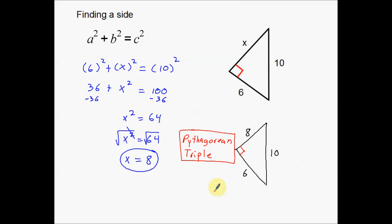There are a lot of common Pythagorean triples out there. As you do more and more problems you'll start to find them. 3, 4, 5 is one of them. 6, 8, 10 is another. 5, 12, 13 is another. 7, 24, 25 is another one. There are a lot of Pythagorean triples out there, and as you do more problems you'll find more of them.